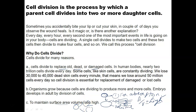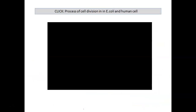Cell division is a very important event, and the generation time differs in different organisms. Bacteria such as E. coli have a generation time of just 20 minutes, whereas in humans one cell divides in 24 hours. Here is a video showing E. coli division alongside human cell division — you can see how the cell divides over 24 hours captured in just a few seconds.